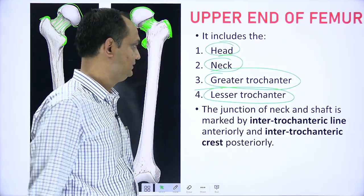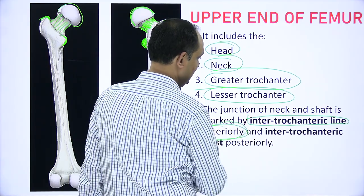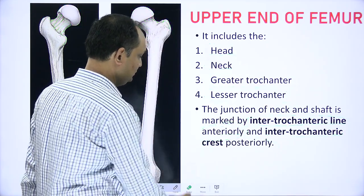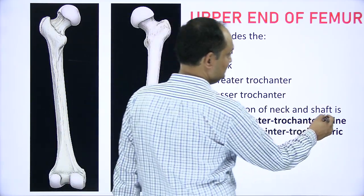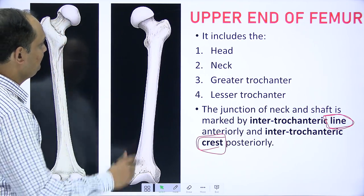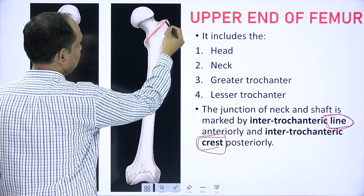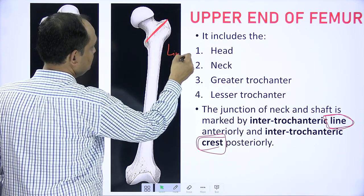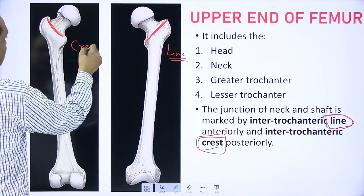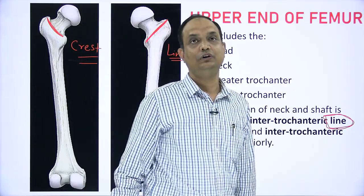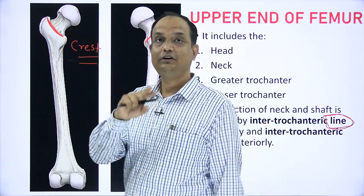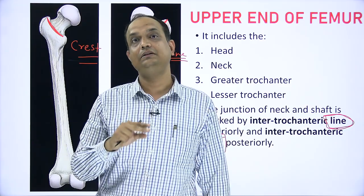The junction of the neck and shaft is marked by the intertrochanteric line anteriorly and the intertrochanteric crest posteriorly. The line is a feature of the anterior surface while the crest is a feature of the posterior surface. On the anterior surface the junction is the intertrochanteric line, and on the posterior surface the junction is the intertrochanteric crest.